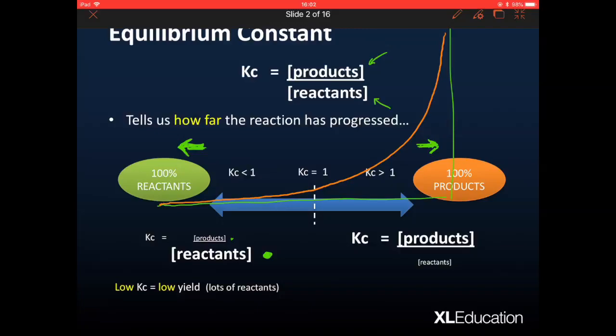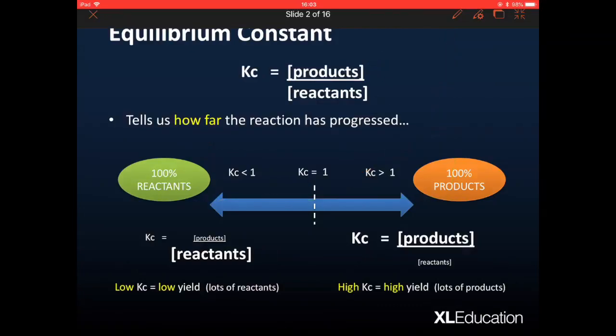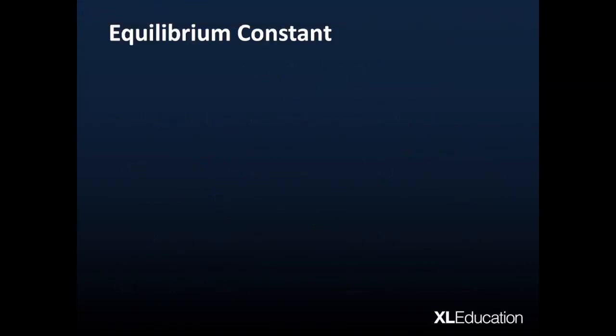So a Kc of less than 1, let's say, for example, 0.01 or 0.001 would mean a very low yield, whereas a Kc of, for example, 100 would be a high yield. In other words, lots of products have been produced. So that's a little bit of an overview of what Kc tells us, is how far has the reaction progressed.